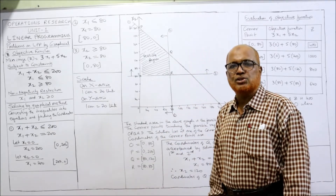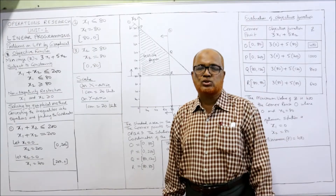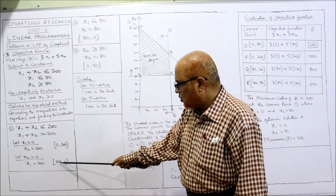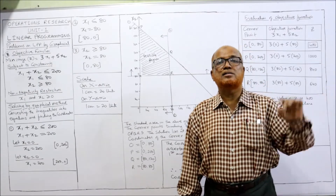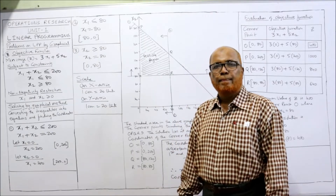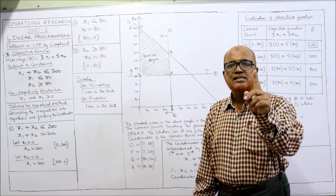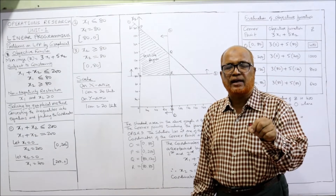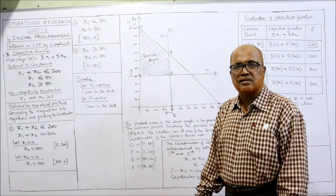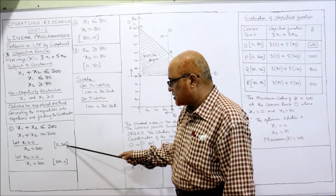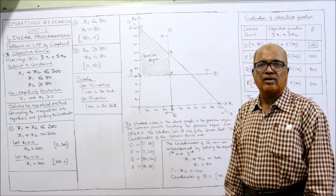Now we need the scale. On the x-axis we are taking x1, on the y-axis we are taking x2. The highest value of x1 is 200. We cannot take one centimeter per unit, so we adjust to 10 centimeters: 200 divided by 10 equals 20, so 1 centimeter equals 20 units. Similarly for y-axis x2, the highest value is also 200, so the same scale: 1 centimeter equals 20 units for both axes.